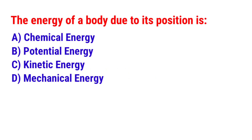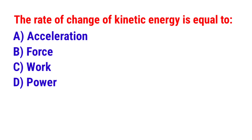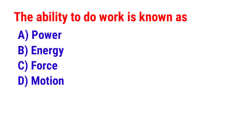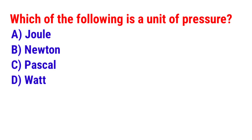Next question: The energy of a body due to its position is? The answer is option B — Potential energy. Next question: The rate of change of kinetic energy is equal to? The answer is option D — Power. Next question: Horsepower is equal to? The answer is option B — 746 watts. Next question: The ability to do work is known as? The answer is option B — Energy. Next question: Which of the following is a unit of pressure? The answer is option C — Pascal.